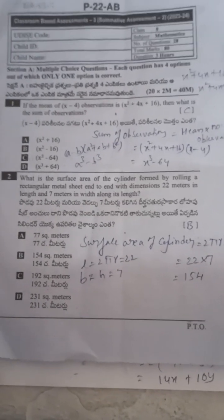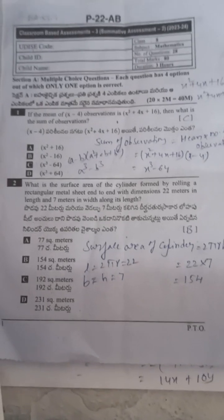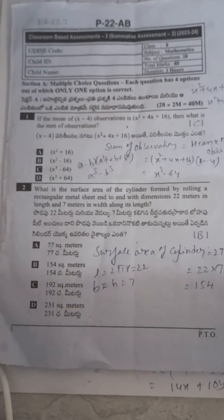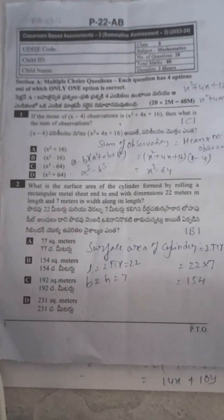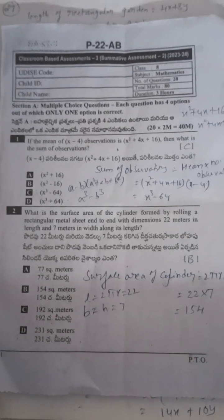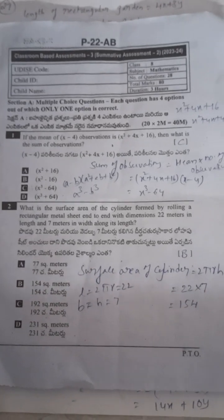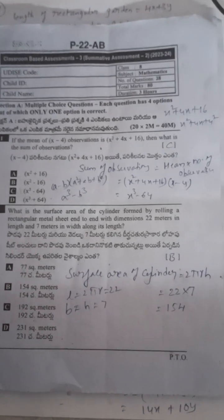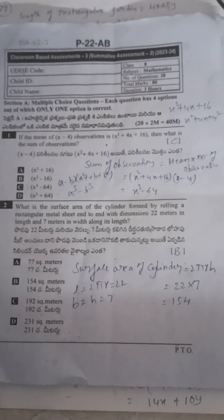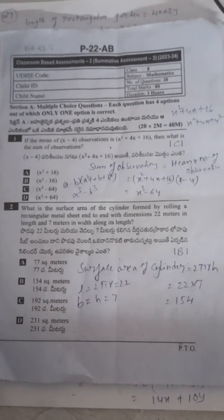Sum of observations is (x squared + 4x + 16) multiplied by (x minus 4). The formula is: (a minus b)(a squared plus ab plus b squared) equals a cube minus b cube. So here x squared plus 4x plus 16 can be written as x squared plus 4x plus 4 squared, where a is x and b is 4.